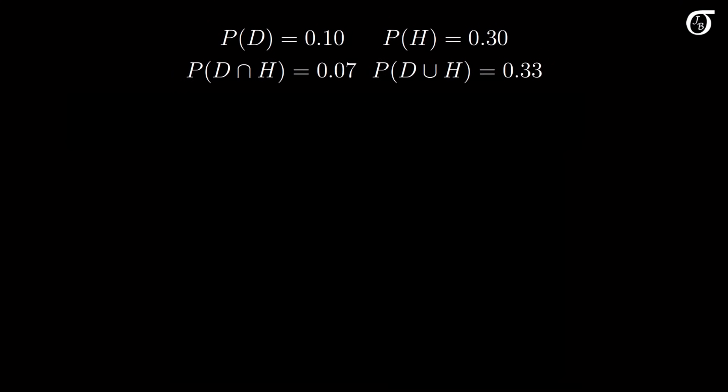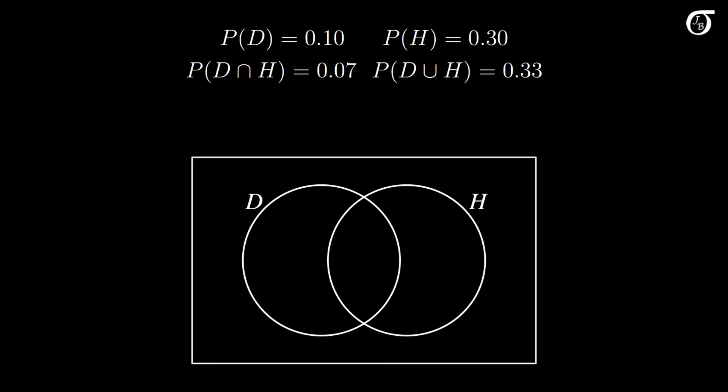It's often helpful to illustrate events and their probabilities in a Venn diagram. Here's a Venn diagram illustrating events D and H. In a typical Venn diagram, the sizes of the various regions — such as the size of circle H — don't carry meaning; the diagram simply illustrates the various regions. So try not to read into the size of the regions.